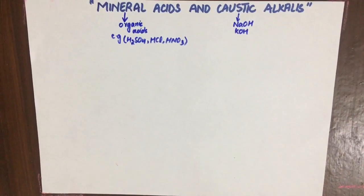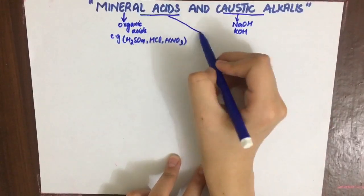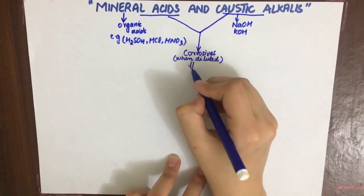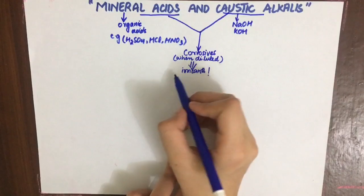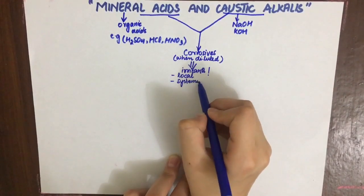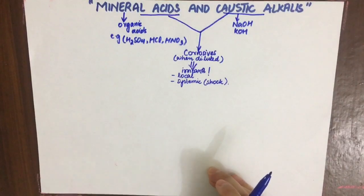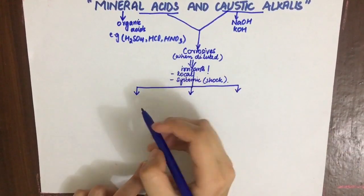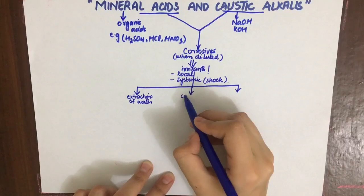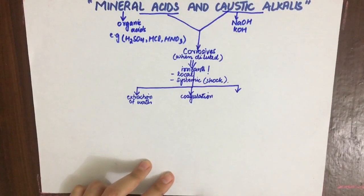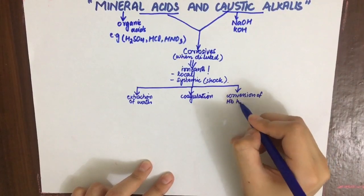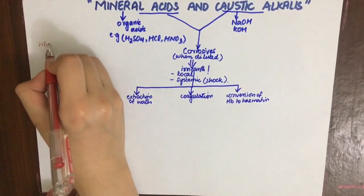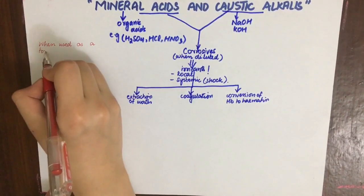Both mineral acids and caustic alkalis are strong corrosive poisons which, when diluted, act as irritants. Their action is mainly localized on the alimentary tract or respiratory tract, though systemic action — majorly shock — is also possible. These corrosive poisons have three main actions: extraction of water from tissues, coagulation of cellular proteins, and conversion of hemoglobin to hematin.